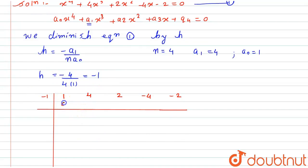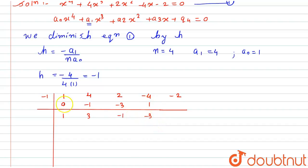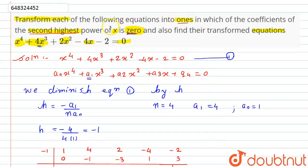First pass with factor −1: bring down 1; 1 × (−1) = −1, and 4 + (−1) = 3; 3 × (−1) = −3, and 2 + (−3) = −1; (−1) × (−1) = 1, and −4 + 1 = −3; (−3) × (−1) = 3, and −2 + 3 = 1. We carry out this algorithm until we get a remainder of 0.